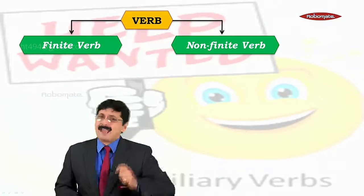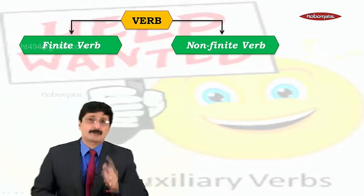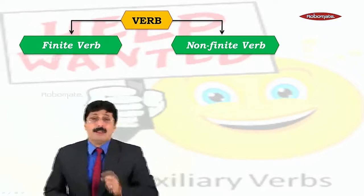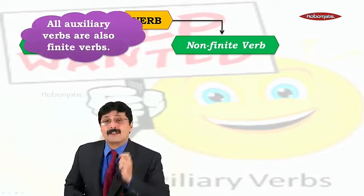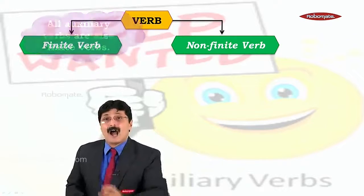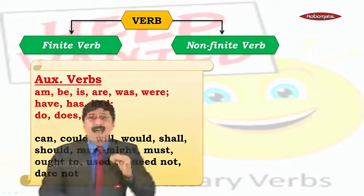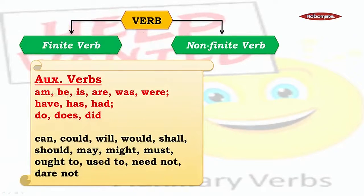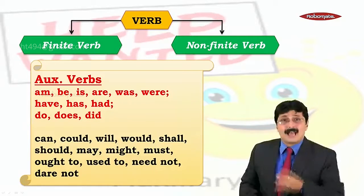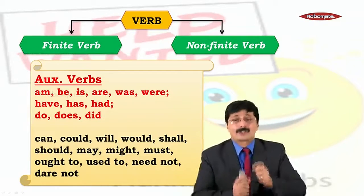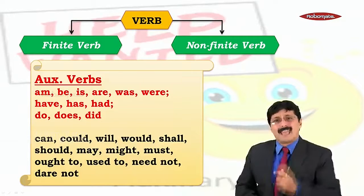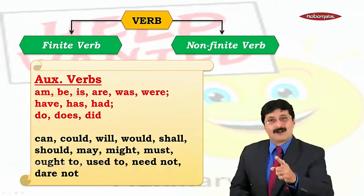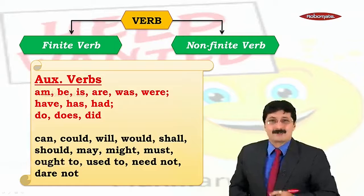So, finite verbs and non-finite verbs. But before we move on, let us not forget that all auxiliary verbs are finite verbs: am, is, are, was, were, have, has, had, do, does, did, can, could, will, would, shall, should, may, might, must, ought to, used to, need, dare — all these verbs are finite verbs.